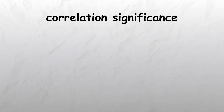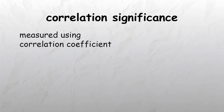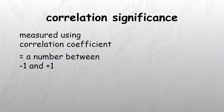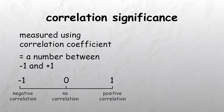The strength of a correlation is measured using a correlation coefficient, which is calculated as a number between minus 1 and plus 1. If the number is close to plus 1, there is a positive correlation. If the number is close to minus 1, there is a negative correlation. And if the number is close to 0, then the variables are uncorrelated.